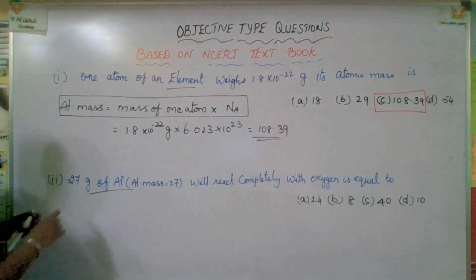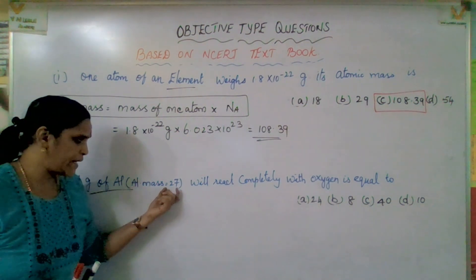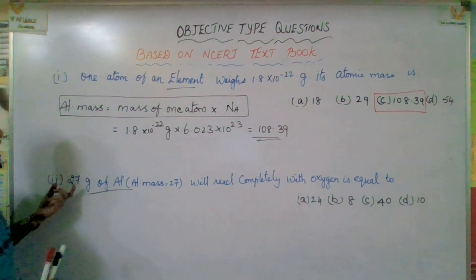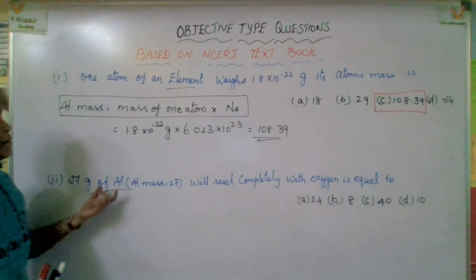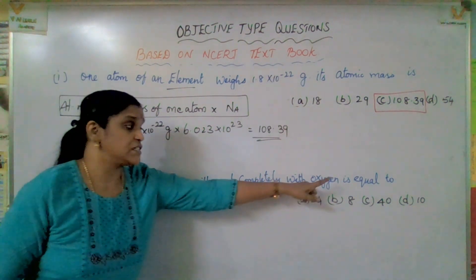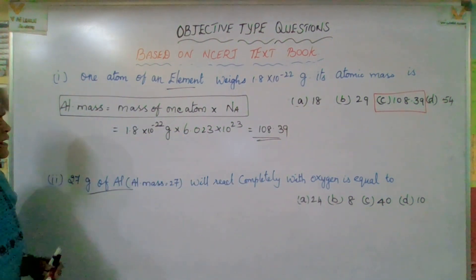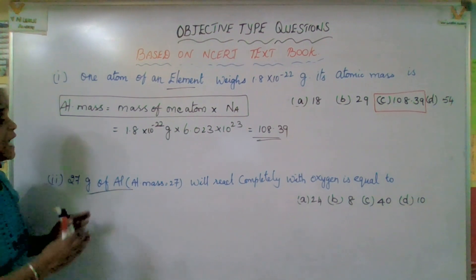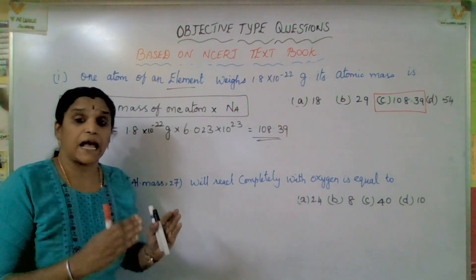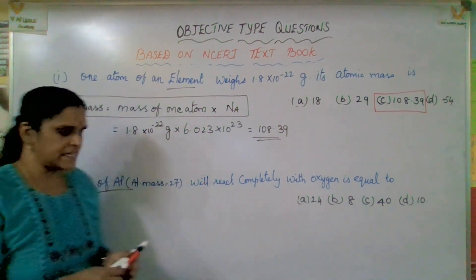The next question. 27 gram of aluminium — atomic mass 27. 27 gram of aluminium will react completely with oxygen equal to how much? They are asking how much oxygen is required.